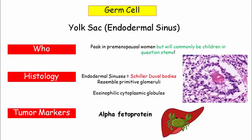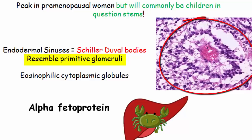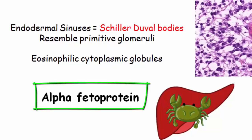Moving from fried eggs to yolk sac tumors, also known as endodermal sinus tumors. Who gets yolk sac tumors is very similar in demographic to dysgerminomas, but in question stems it will almost always be a young child. Yolk sac tumors, or endodermal sinus tumors, form Schiller-Duval bodies — clusters of cells surrounding eosinophilic material resembling primitive glomeruli. Remember that: primitive glomeruli. If you see this in the question stem, it's a yolk sac tumor. Because these tumors have such a distinguishing feature, test makers will likely want you to know the tumor marker, which is alpha-fetoprotein — the same marker secreted by hepatocellular carcinoma.